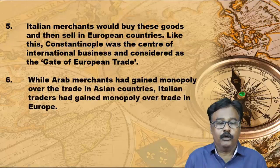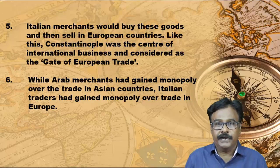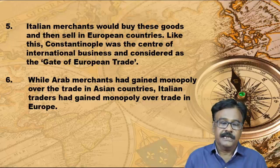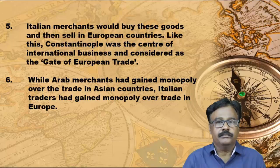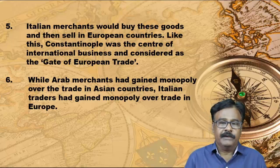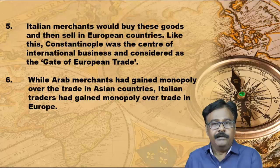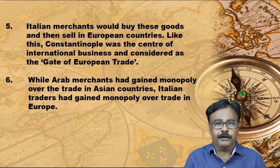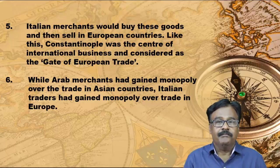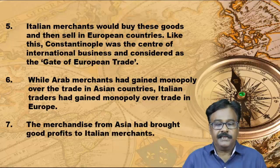While the Arab merchants gained monopoly over the trade in Asian countries, the Italian traders had gained monopoly over the trade in Europe. Monopoly means complete control — when one person or one company has complete control over a particular business. In India and Asian countries, Arab merchants had complete control over the spice trade, whereas in Europe, Italy had complete control. The merchandise from Asia brought good profits to Italian merchants.